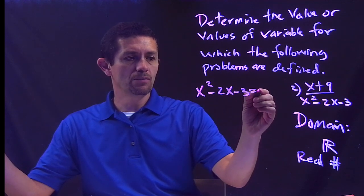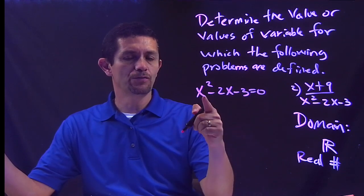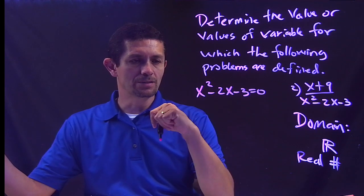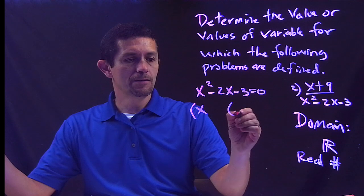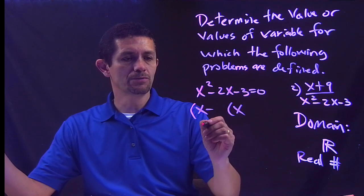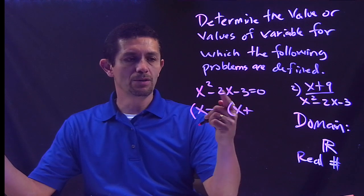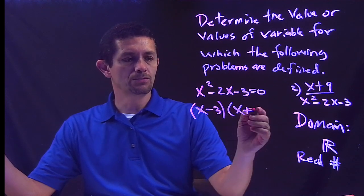Minus 2x minus 3, and I make it equal to 0. Now we need to find the values of x. So this is a trinomial, so I have to factor this out. X times X, that negative comes over here. Negative times negative is positive. Two numbers that multiply to get 3 and add to get 2.